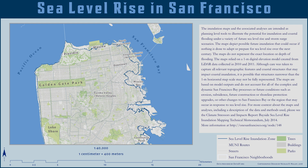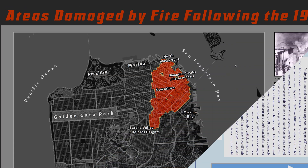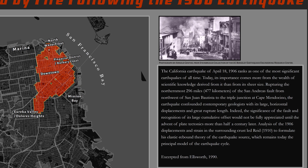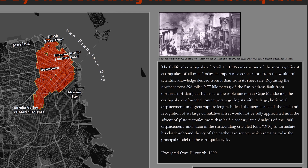You may search the internet for appropriate text. If your theme is sea level rise, the metadata on the DataSF website might also be helpful. If your theme is fire damage from the 1906 earthquake, the USGS has a webpage that might interest you. Links are provided on the written instructions.